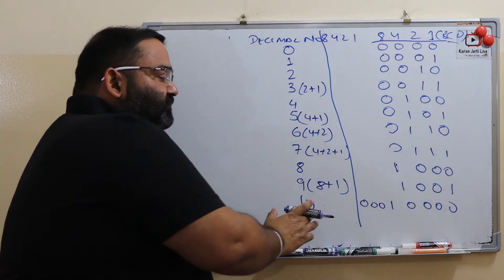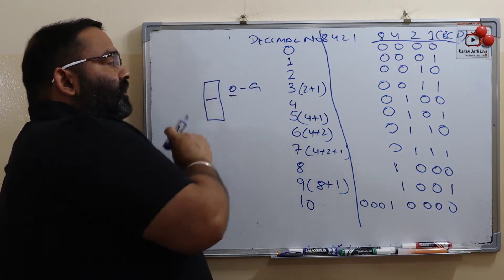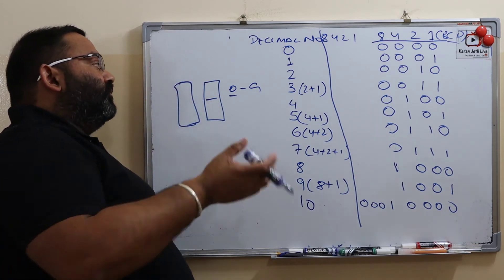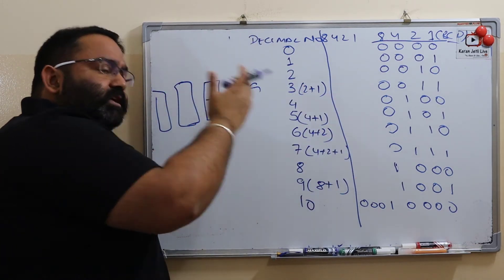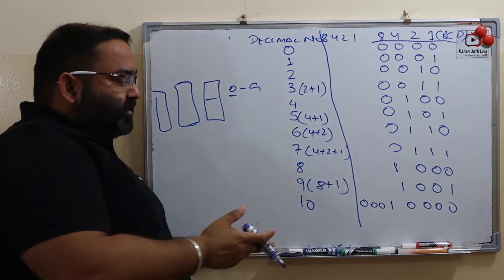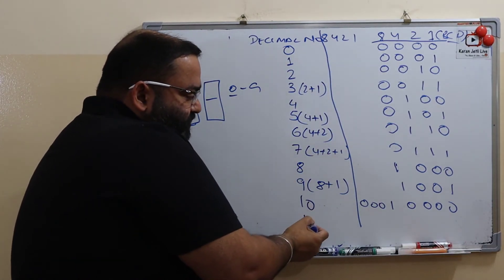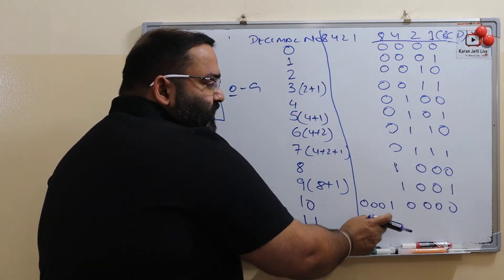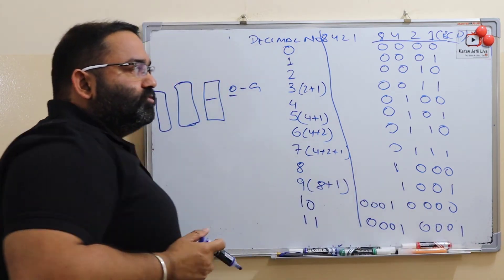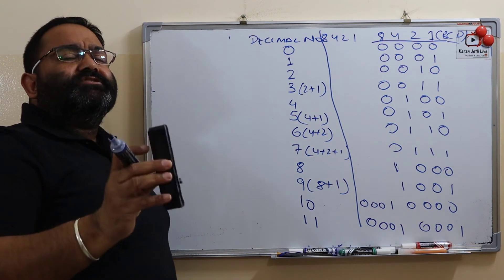For the 7 segment display, one segment can display only numbers from 0 to 9, so if you want to display 10 you need 2 segments. For 100, you need 3 segments. In BCD, a single digit number needs 4 bits; a double digit number needs 8 bits — 4 bits for each digit. For example, 11 is 1 and 1, so it is represented as 0001 0001. BCD codes are the easiest coding system.